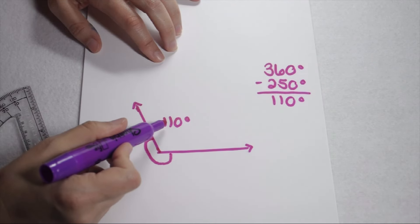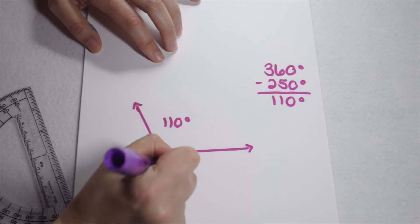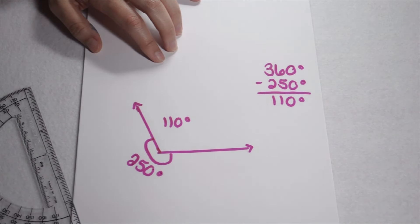So, 110 degrees plus my 250 degree reflex angle together make my complete circle. So, I know the outside reflex is my 250 degrees.